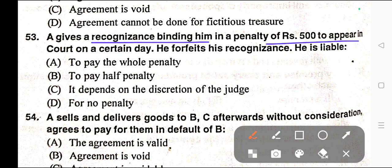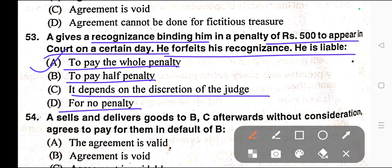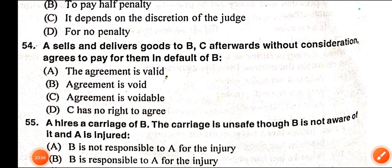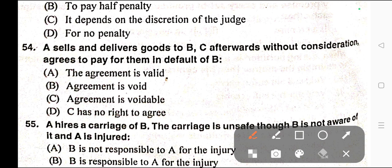Question number fifty-three: A gives a recognizance binding him in a penalty of Rs. 500 to appear in court on a certain day. He forfeits his recognizance. He is liable — A) To pay the whole penalty, B) To pay half penalty, C) It depends on the discretion of the judge, D) For no penalty. Correct answer is option A — to pay the whole penalty.